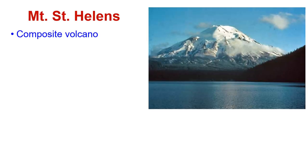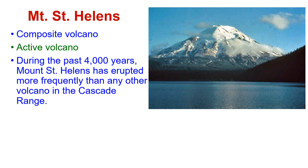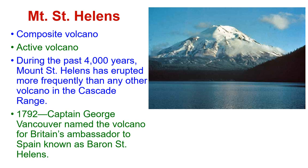Mount St. Helens is a composite volcano and an active volcano. During the past 4,000 years, Mount St. Helens has erupted more frequently than any other volcano in the Cascade Range. In 1792, Captain George Vancouver named the volcano for Britain's ambassador to Spain, known as Baron St. Helens.